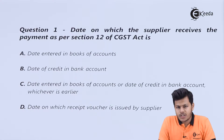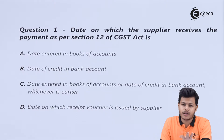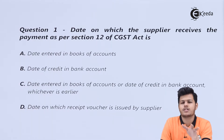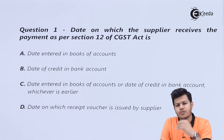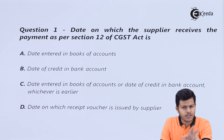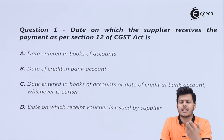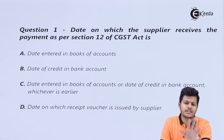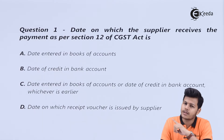दोस्तों सबसे पहला question देखने से पहले एक बात समझ लेते हैं। यहाँ पर जो हम discuss करने वाले हैं वो mainly time of supply chapter के उपर वाले questions होंगे। time of supply chapter में mainly दो sections हैं - section number 12 है जो goods के उपर बात करता है, और section number 13 है जो services के उपर बात करता है। forward charge और reverse charge दोनों scenarios इन sections में दिये हुए हैं। earliest of all का concept हमेशा चलता है, चाहे reverse charge हो चाहे forward charge हो।